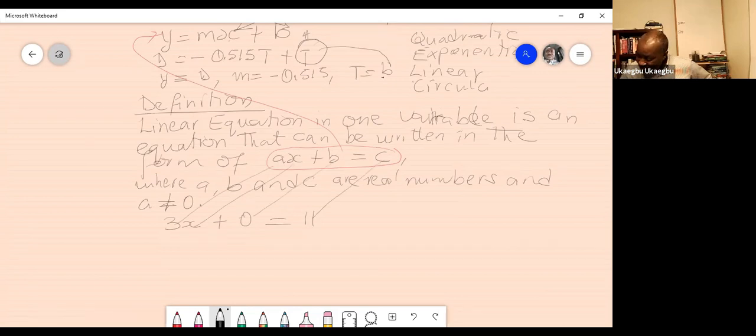So even if you remove, even if you transfer Y at 11 to the left side, you are going to have 3X minus 11 equal to Y, which is still the equation of a linear function.